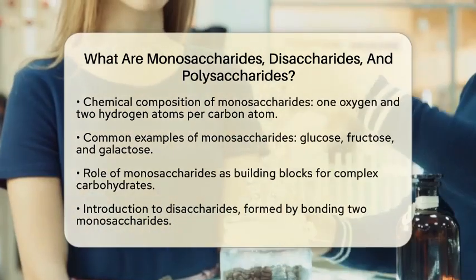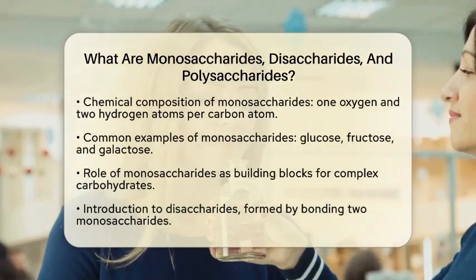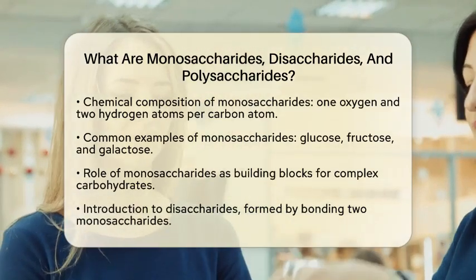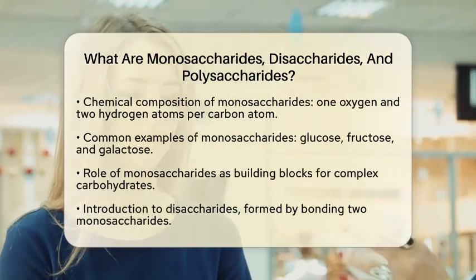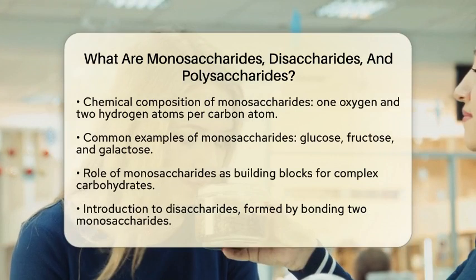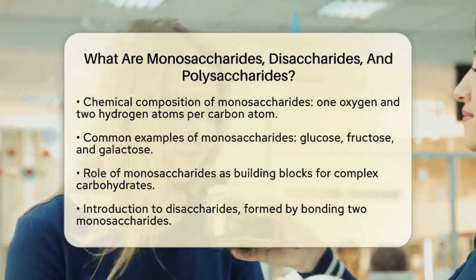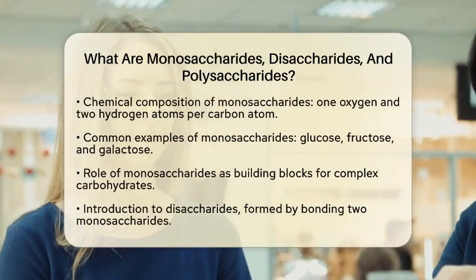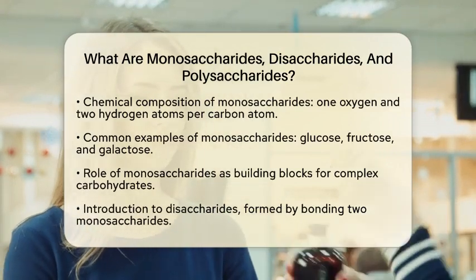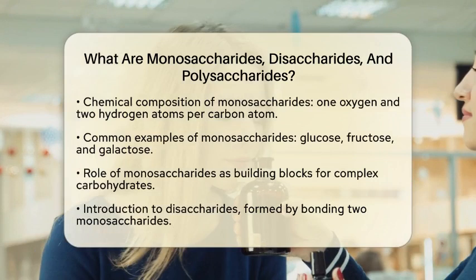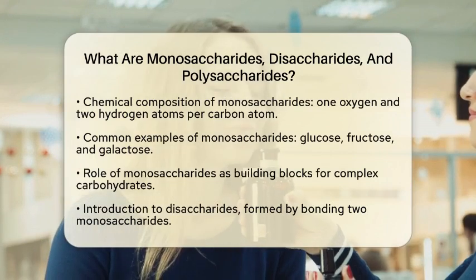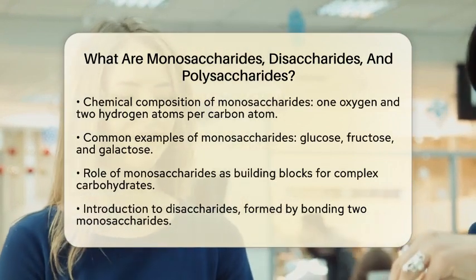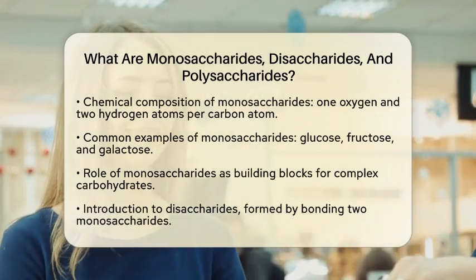Disaccharides are formed when two monosaccharide molecules bond together. This bonding occurs through a glycosidic bond, which is a type of covalent bond. During this process, a water molecule is removed, which is known as a dehydration reaction.